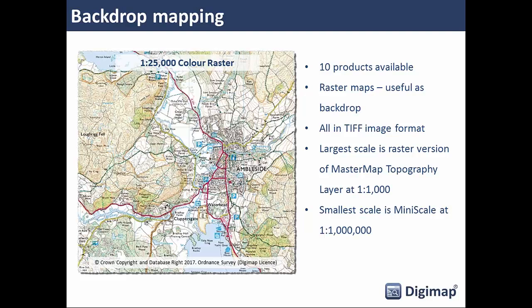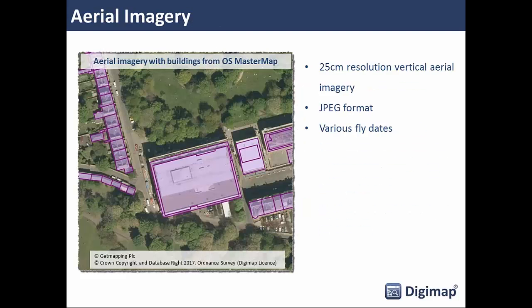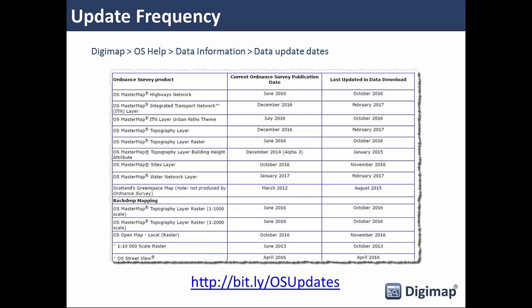In terms of aerial imagery, this is a new collection launched in October with good uptake so far. It has 25-centimeter resolution aerial imagery across the whole country provided by GetMapping, in JPEG format. We get annual updates — the vast majority of data is currently from 2011 onwards, but we're processing a large proportion of 2015 data which will be in the service very soon. We also keep all the data up to date in Digimap, with a help page listing when data was last updated. Previous versions of data are also available if you need data for a particular point in time.